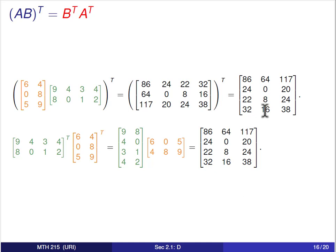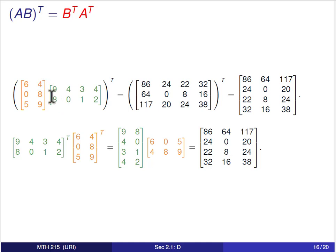To see why this isn't just coincidence: looking at the entry 86 in the top-left corner, in the original product it came from pairing the row [6,4] with the column [9,8], giving 54+32=86. In the reversed-transpose product, we pair [9,8] with [6,4] and get 9×6 + 8×4 = 54+32 = 86. The same numbers appear — going across a row in a transpose is the same as going down a column in the original matrix.